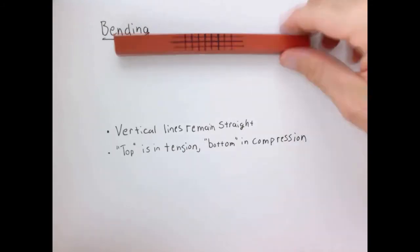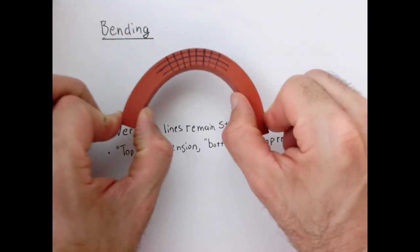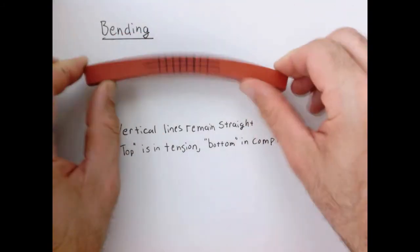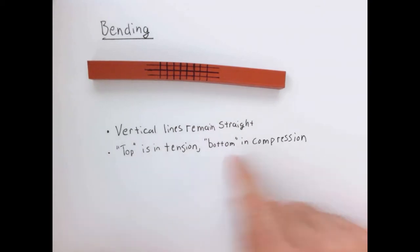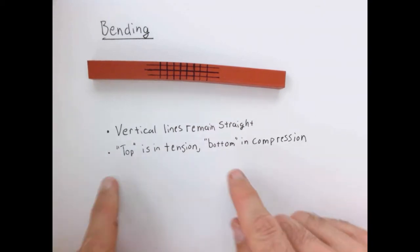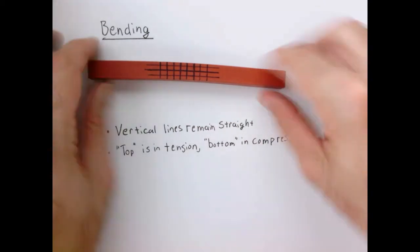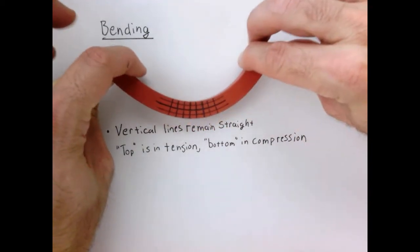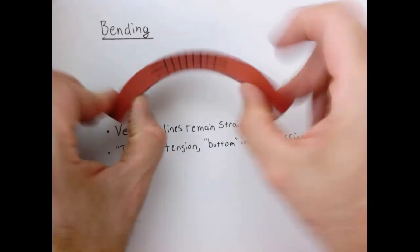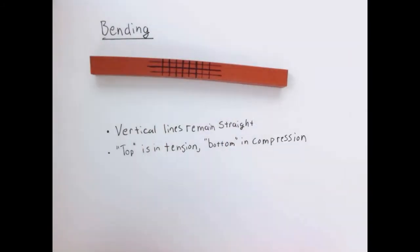So you have two observations: vertical lines remain straight, and the top is in tension while the bottom is in compression. I put top and bottom in quotes because of course I could have bent the bar the other way, but I think you understand at this point.